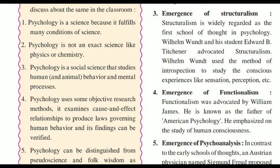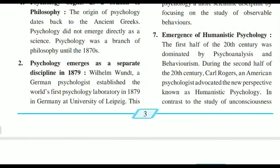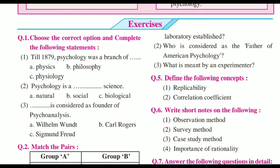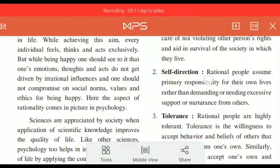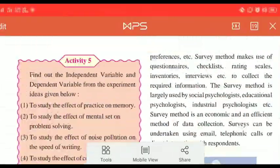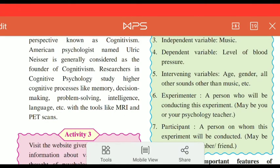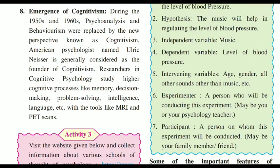Next question: what is meant by an experimenter? It is on page number 4, point number 6. The experimenter is the person who conducts an experiment — the person who will be conducting this experiment is called an experimenter. So that is the answer for your one sentence.